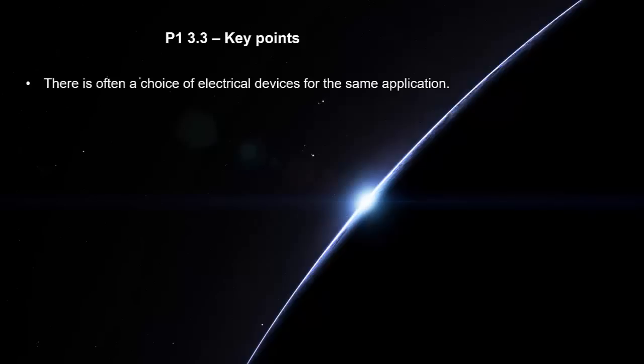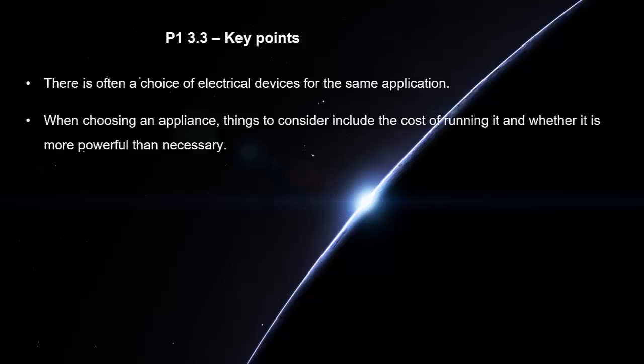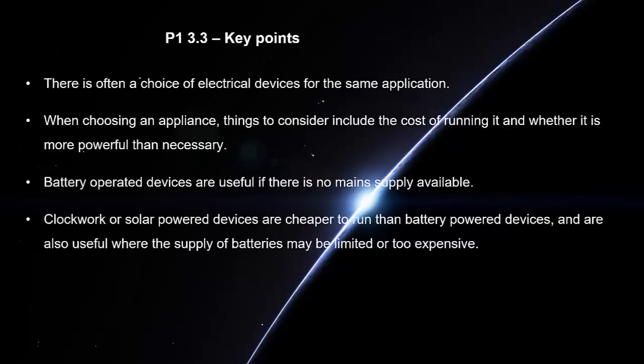There is often a choice of electrical devices for the same application. When choosing an appliance, things to consider include the cost of running it and whether it is more powerful than necessary. Battery operated devices are useful if there is no main supply available. Clockwork or solar powered devices are cheaper to run than battery powered devices and are useful where the supply of batteries may be limited or too expensive.